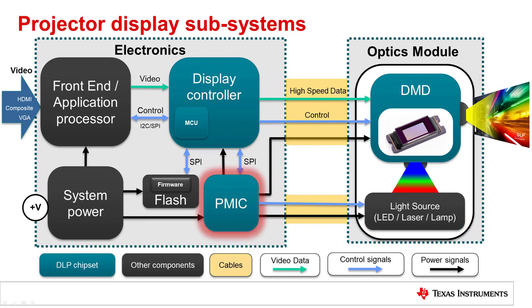Within the DLP chipset, the PMIC provides appropriate power rails for the controller, DMD, and light source, and receives SPI control signals from the controller. It also drives the illumination to sync up with video data.